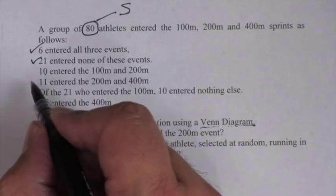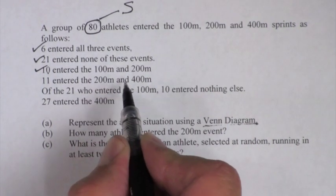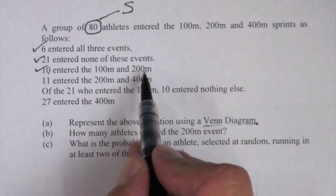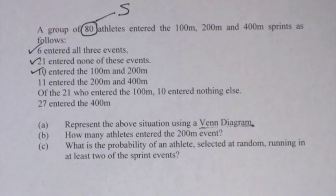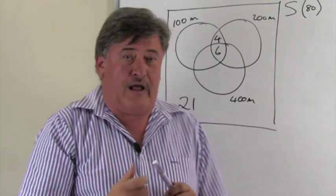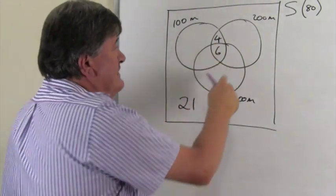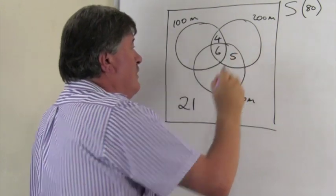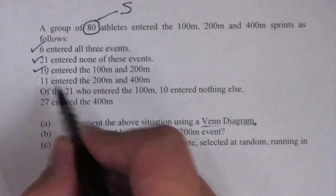Eleven entered the 200m and the 400m — similar to the previous one. The overlap between 200m and 400m must total eleven. We have six already in the middle, so the section for 200m and 400m only — excluding the center — must be five, because five plus six equals eleven.